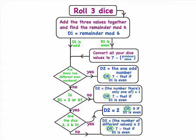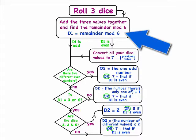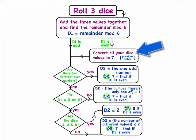Another solution mentioned in Matt's video is represented by this complicated flowchart. I'm saying it's complicated not because it has many cases, but because it has a lot of mathematics. For example, right at the start you have to add the three values together and find the remainder modulo 6 — in all cases, no matter which numbers you rolled. On top of that, in half of the cases when the result is even, you have to convert all the dice values to some other value and then work with those converted values in your head. So you cannot read the values directly off the dice.